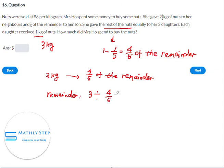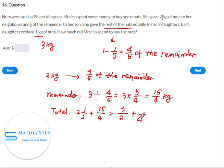This is equal to 15/4 kg. This is after giving to the neighbors, and this is the nuts left. So total nuts that Mrs. Ho bought will be 2.5 plus 15/4, and this is equal to 15/4.